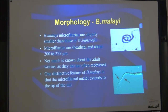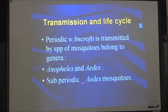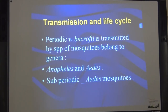Not much is known about the adult worms as they are not often recovered. One distinctive feature of Brugia malayi is that the microfilaria nuclei extend to the tip of the tail, unlike the microfilaria of W. bancrofti. Periodic W. bancrofti is transmitted by mosquitoes of the genera Anopheles and Aedes, and the sub-periodic form is transmitted by Aedes mosquitoes — these mosquitoes are the vectors of the disease.